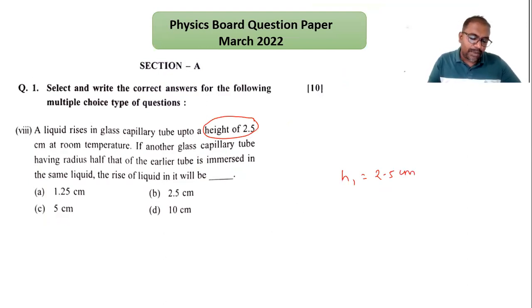For this particular capillary tube, I can consider the radius as r. Another capillary tube has radius half that of the earlier one, so half of r means r/2.